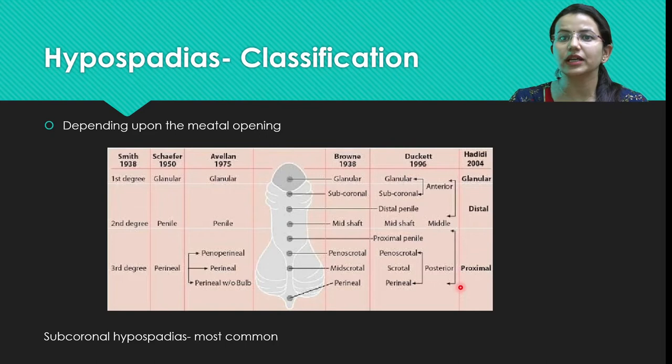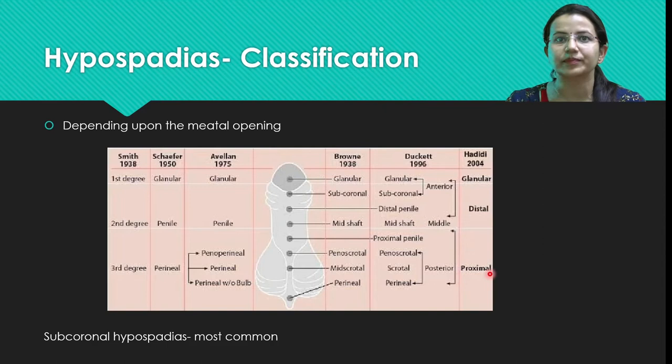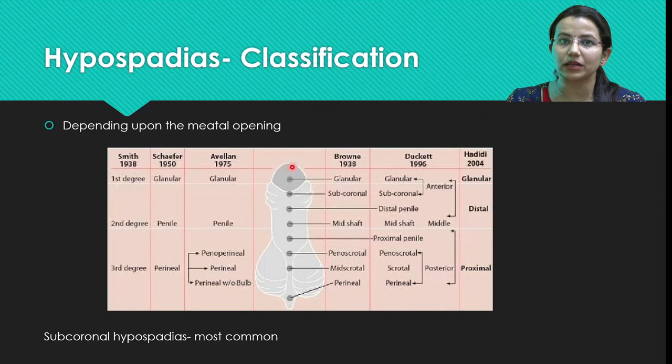Proximal hypospadias usually requires other techniques involving flaps or grafts, or they need to be operated in a staged manner. Looking at a diagram of the penis: if the urethral meatus is at the top it is orthotopic or normal. If it is in the glans it is glandular hypospadias.